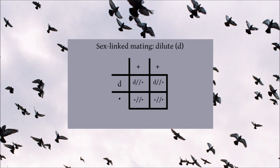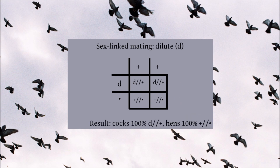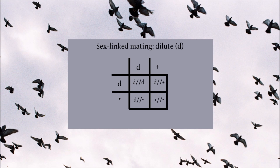Now we fill in the squares like normal, and we also fill in the bullet points on the bottom row. We switch the plus and d in the top row so they're written in the correct order. The results look similar to the standard monohybrid cross, but there is one key difference: the results are separated into the sexes of the babies. The top row of results are the options for cock babies, and the bottom row are results for young hens. So all baby cocks carry dilute, but none of the baby hens do. If we try it again with the father carrying one copy of the dilute mutation as well, only half the young cocks are heterozygous carriers of dilute, the other half express dilute, whereas half the hens express dilute and the other half are simply wild type.